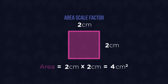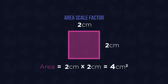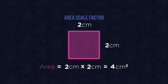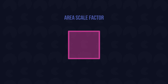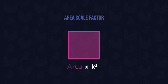Although the lengths were multiplied by 2, the area has been multiplied by a scale factor of 4. The rule of thumb is that when the lengths of a shape are multiplied by a constant scale factor, represented by K, then the area will be multiplied by K squared.